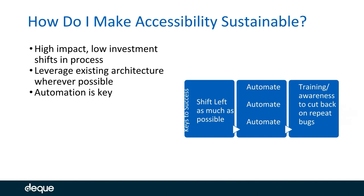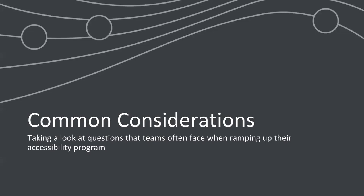Tools for developers help front-load and capture as many issues as possible early in the process. Proper tooling in development and QA allows you to leverage automation as much as possible. Tools that deliver documentation around what issues are present — why they're issues, what success criteria they violate, and who is affected — really help to cement in testers and developers why accessibility violations matter and how to prevent them from happening in the future. You want tools that provide education and awareness as part of their reporting.